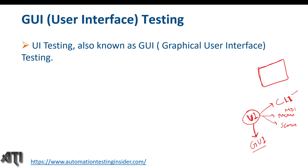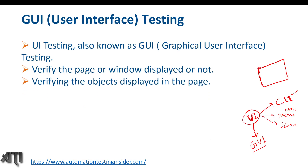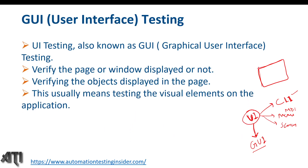UI testing, also known as GUI testing, verifies whether a page or window is displayed correctly. The main purpose is not primarily about functionality — we check whether the look and feel is proper, and whether all elements are properly designed as per the given requirements. Whatever elements appear in the web page or application should match the requirements.